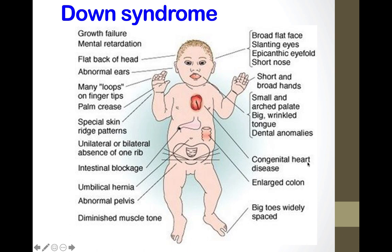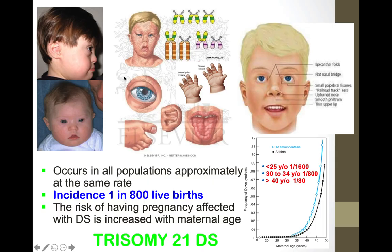Congenital heart disease is very common in Down syndrome. Other features include diminished muscle tone (which improves over time), small and arched palate, big wrinkled tongue, dental anomalies, short and broad hands, many loops on fingertips, palm creases, and flat back of the head. This is trisomy 21.